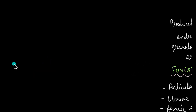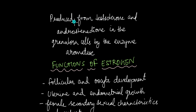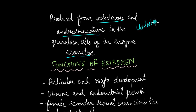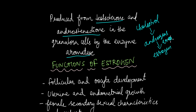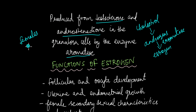Unlike those androgens, estrogen is not directly derived from cholesterol. In fact, it is produced from testosterone and androstenedione in the granulosa cells by the enzyme known as aromatase. In females, cholesterol is initially converted to testosterone and androstenedione — that is, converted into androgens — and it is these androgens that are then converted to estrogen with the help of aromatase. This is why low levels of testosterone and androstenedione can be detected in females as well, and why males have trace amounts of estrogen in their body, since testosterone can be converted to estrogen at low levels in males too.